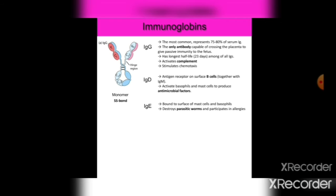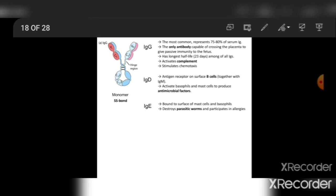IgD acts as an antigen receptor on the surface of B cells. Together with IgM, IgD activates basophils and mast cells to produce antimicrobial factors. The immunoglobulin structure is Y-shaped, with variable light chains, constant light chains, and constant regions. IgD serves as antigen receptor on B cells, and together with IgM activates basophils and mast cells to produce antimicrobial activity.